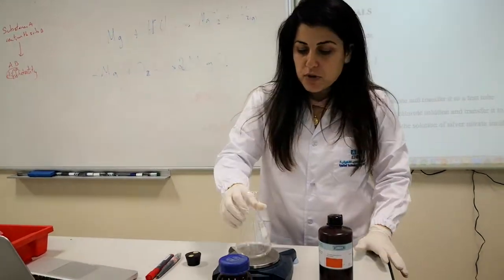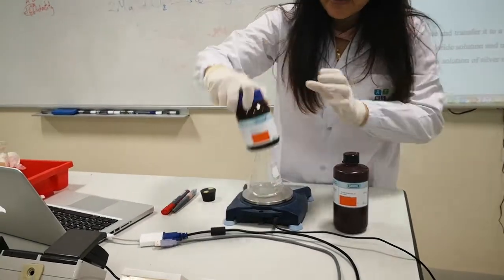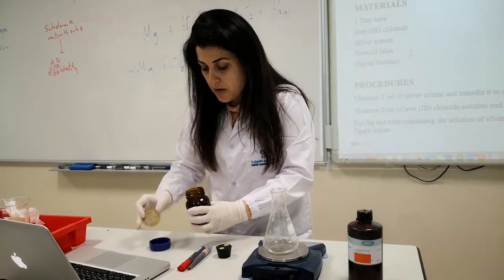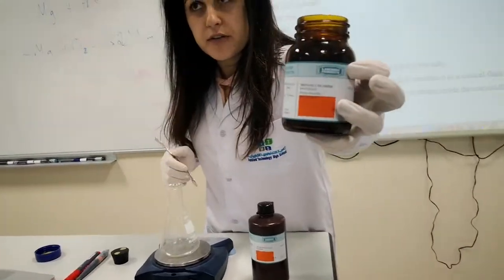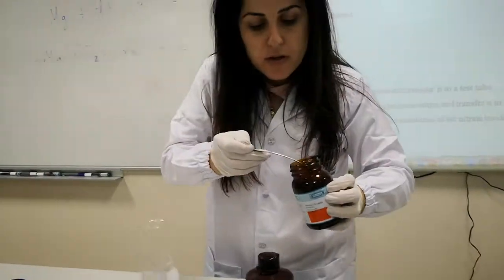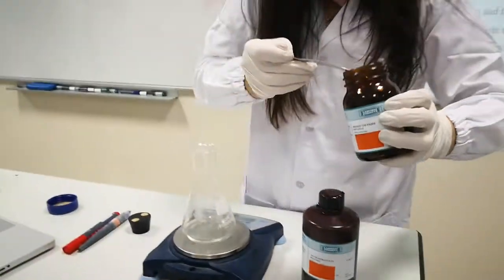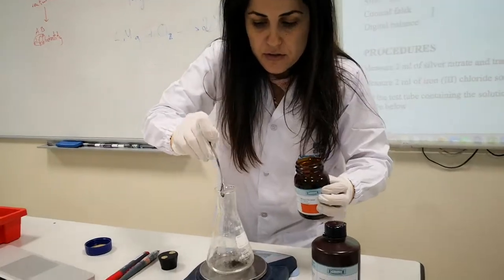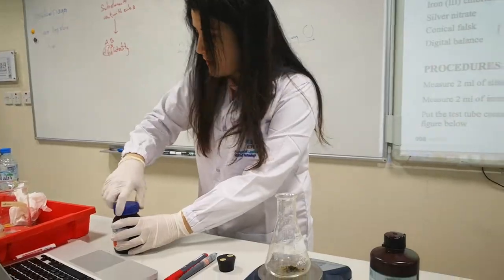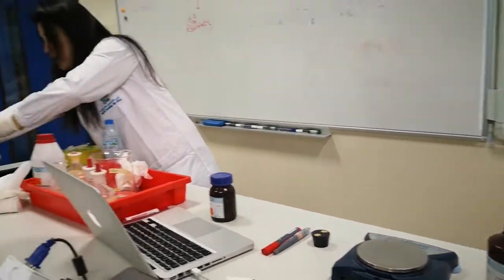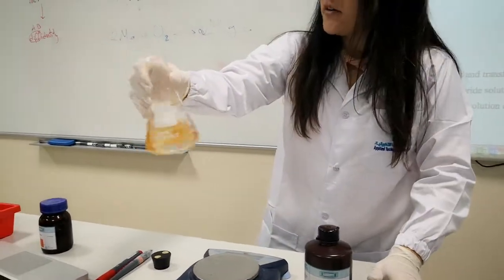First, I'm going to put the flask on the balance. In the flask, I am going to add a little bit of iron(III) chloride and dissolve it in water. So I'll add iron chloride here and add water to the solution to dissolve it.